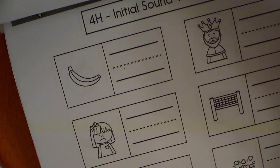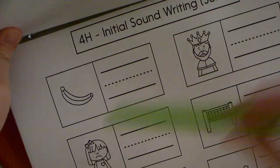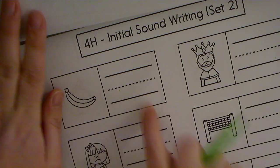So what we'll do here is we're going to say the initial sound, which is the beginning letter sound of each picture, and then you're going to write that on the line.